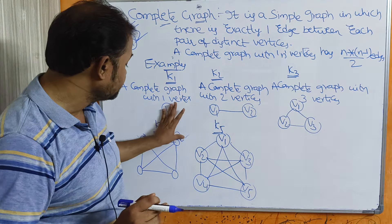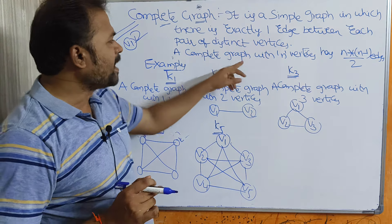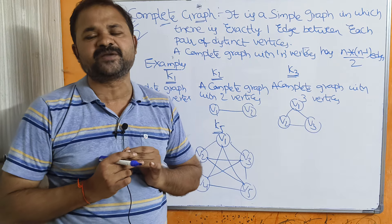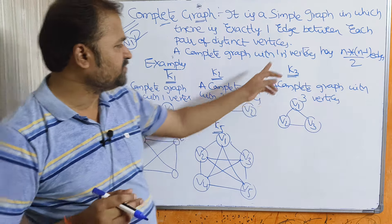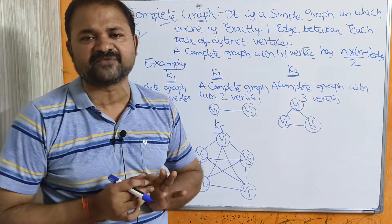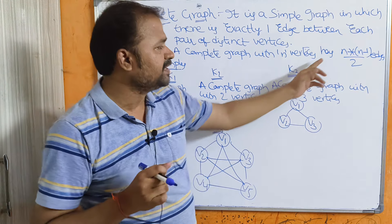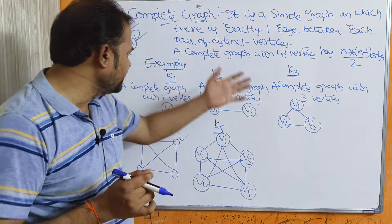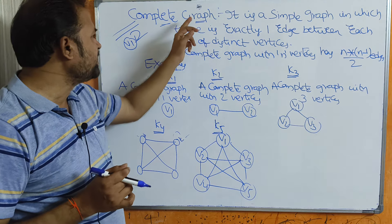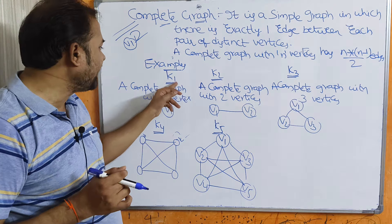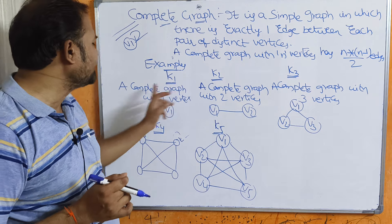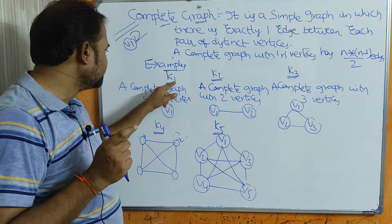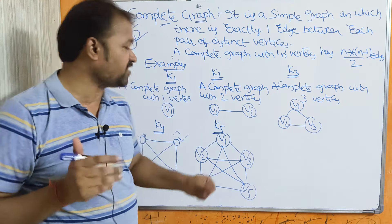Self loops are not allowed in a complete graph. A complete graph with n vertices has n(n−1)/2 edges. Complete graph is denoted by K, so K1 means a complete graph with only 1 vertex, and K2 means a complete graph with 2 vertices.